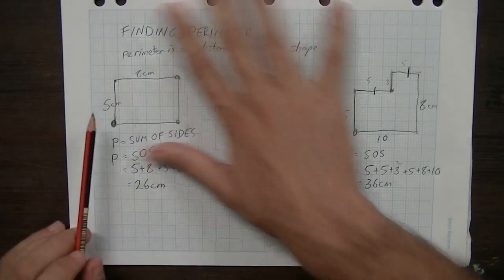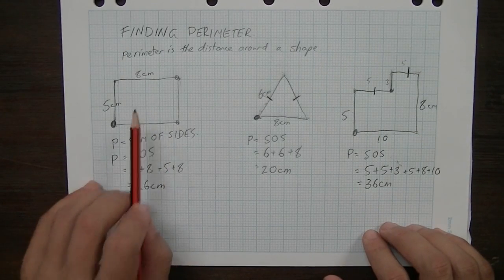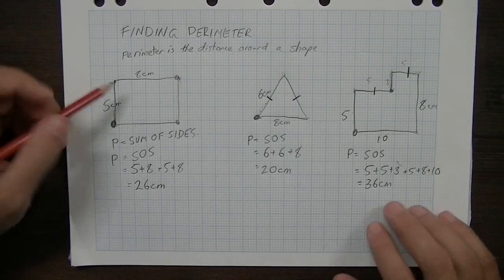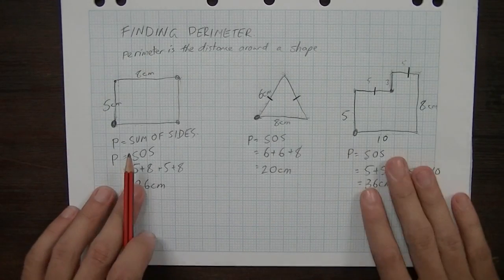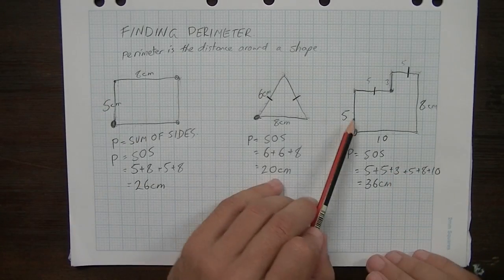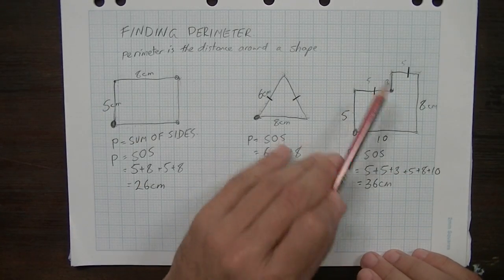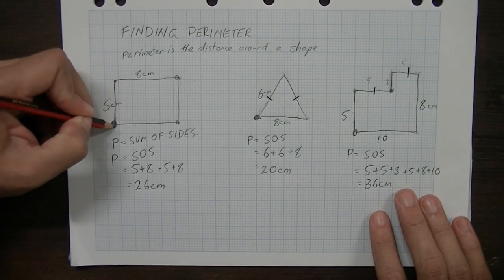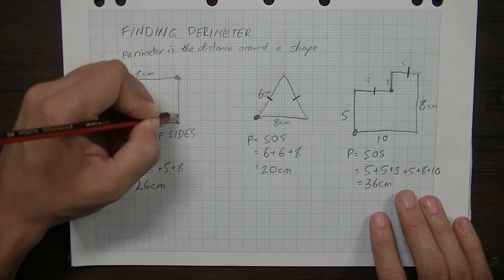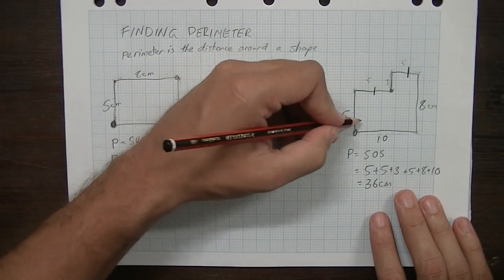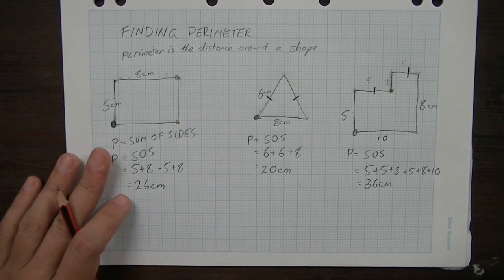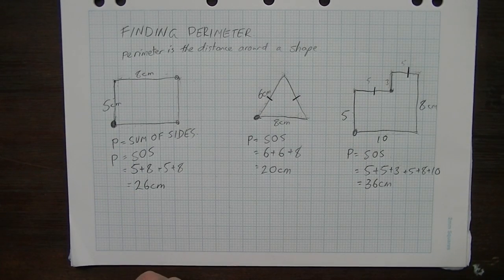Okay, here you have perimeter, three very simple shapes, finding the distance around those shapes. Try to bear in mind that even though this is a very, very simple concept, it's when we start getting to the more complicated shapes like this, that people start stuffing them up. The best thing you can do to avoid that, put a dot somewhere, walk around the object. In our next video, we'll look at circles, and how to find the perimeter of circles.